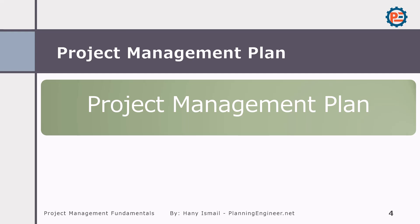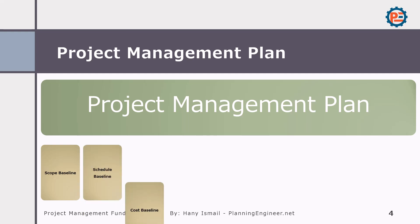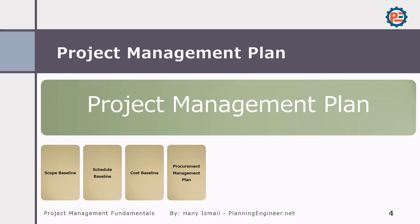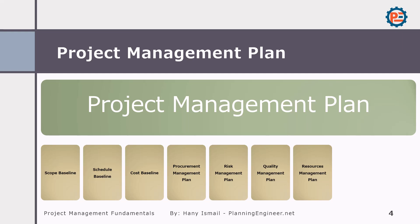The project management plan will have several components: the scope baseline, the schedule baseline, cost baseline, procurement management plan, risk management plan, quality management plan, resource management plan, stakeholder management plan, and communication management plan.